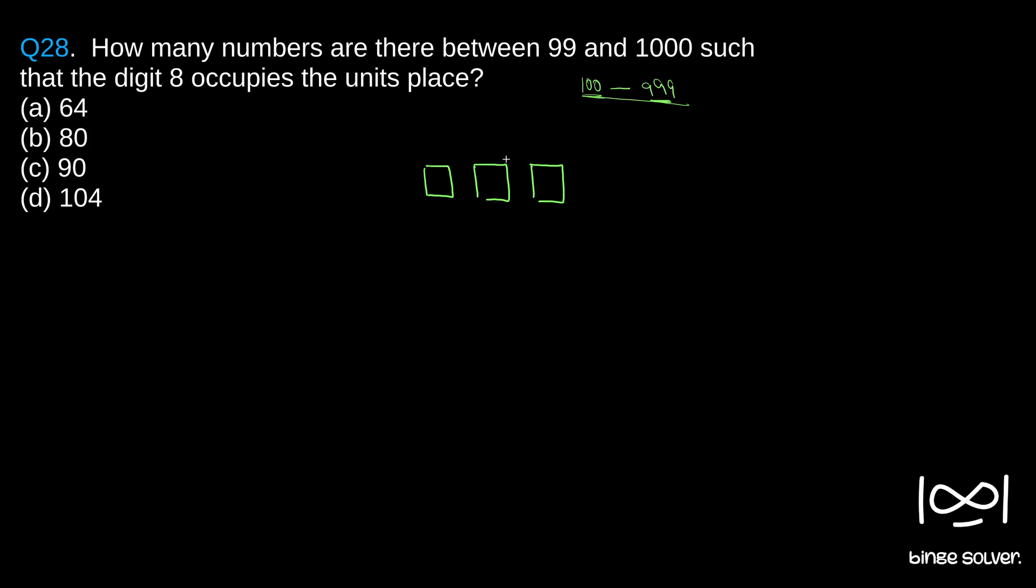And it is said 8 occupies the unit place, so it is here. We don't know which number comes here. So we can simply multiply the total number of possibilities. Since it is not said whether the digits that appear are repeating or should not repeat, we can assume they can repeat. So how many cases are there?